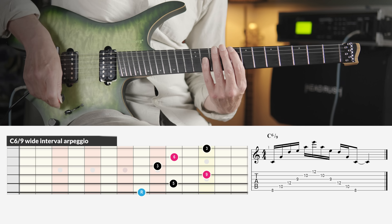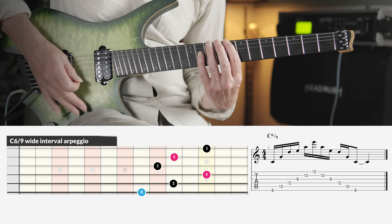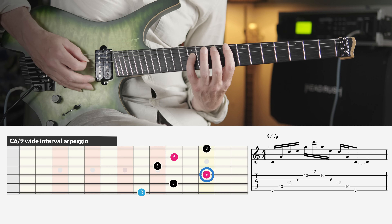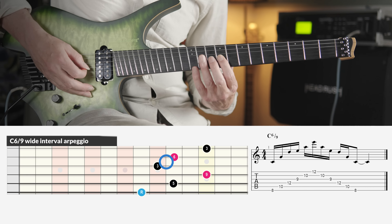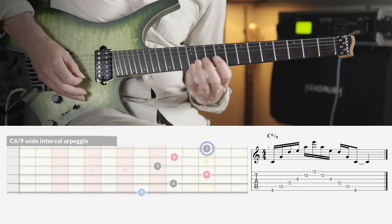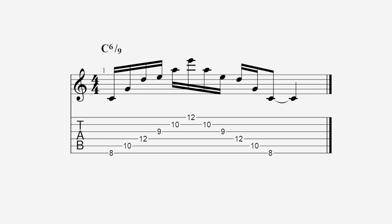Now we're going to skip some notes while still leaving most of the essential notes intact. Starting by stacking two 5ths we now have a root C, a 5th G, a 9th D, a 3rd E, a 6th A, and again a 3rd E. You could use economy picking for a smooth result — all downstrokes from the 6th string to the 1st string, and all upstrokes on the way back from the 1st string to the 6th string.